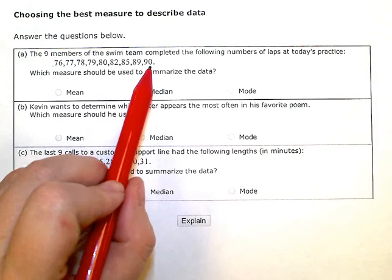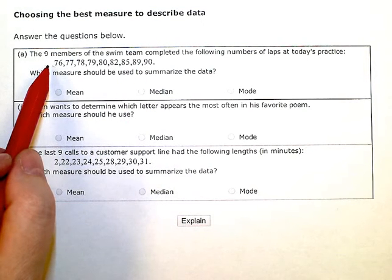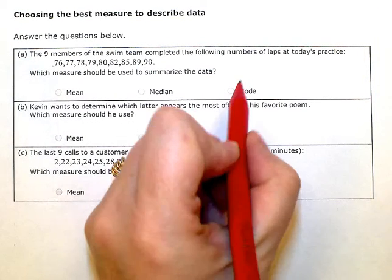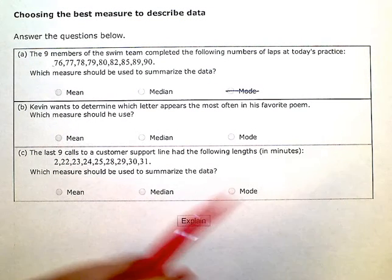So I don't have any number that occurs more than once, so there is no mode here. So the mode is not going to help me. Okay, so that one's out. Now I just have to choose between mean and median.